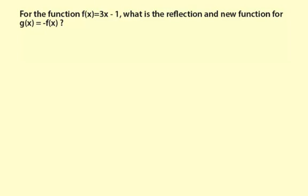For the function f of x equals 3x minus 1, what is the reflection and new function for g of x equals negative f of x? So what you're doing is you're switching the sign of all the outputs.